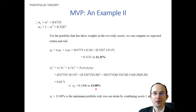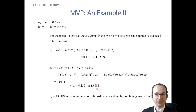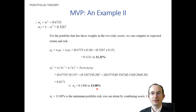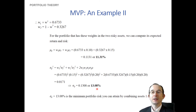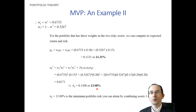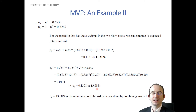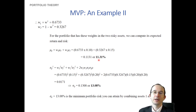Remember, this is the minimum variance portfolio we're solving for. The lowest standard deviation we can obtain is 13.08%, which is actually lower than the standard deviation of either of these assets. So even though they are positively correlated, we can still create a benefit from diversification by getting a standard deviation lower than either one separately, at the cost of a lower expected return than either asset.